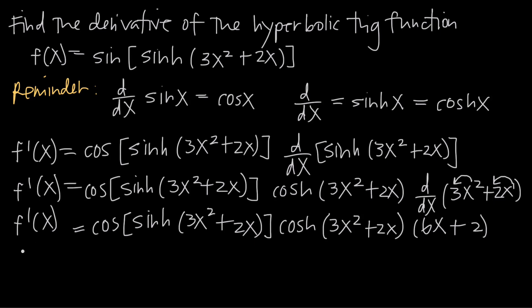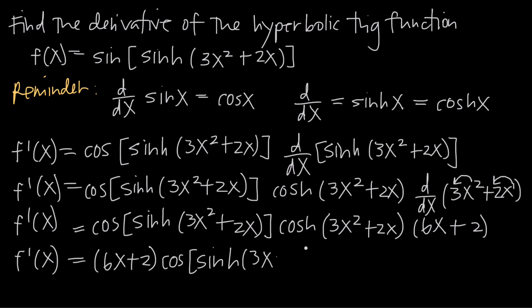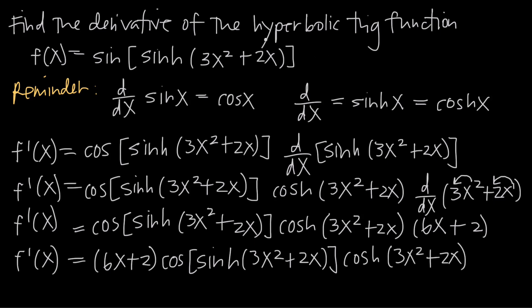We can write it a little cleaner by bringing the polynomial out front: the final answer is (6x + 2) times cosine of sinh(3x² + 2x) times cosh(3x² + 2x). That's the derivative of the function we started with, found using the derivative formulas for sine and hyperbolic sine and by applying chain rule.